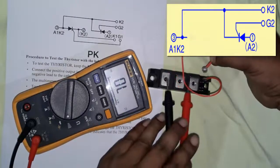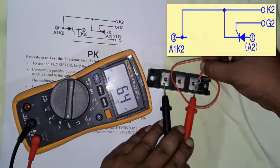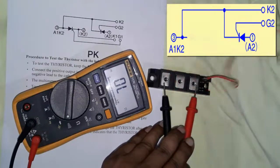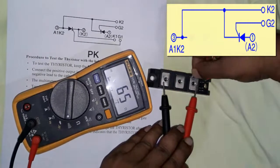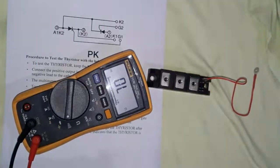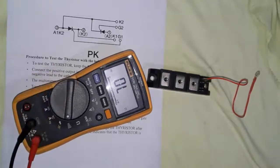When disconnected, it's open. When touched, it shows continuity closed. That means anode and cathode show open, but when we touch from anode to gate, it will show closed continuity. We can also test in diode mode.